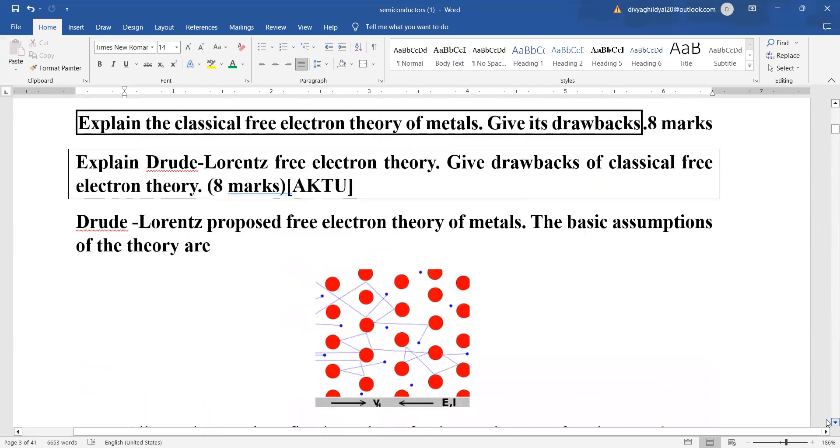The most common question: explain the classical free electron theory of metal, give its drawbacks. Explain Drude-Lorentz free electron theory, give the drawbacks. You can see this is a very important question, where in eight marks you have to compile the free electron theory, or maybe in five marks discuss the drawbacks of the theory.